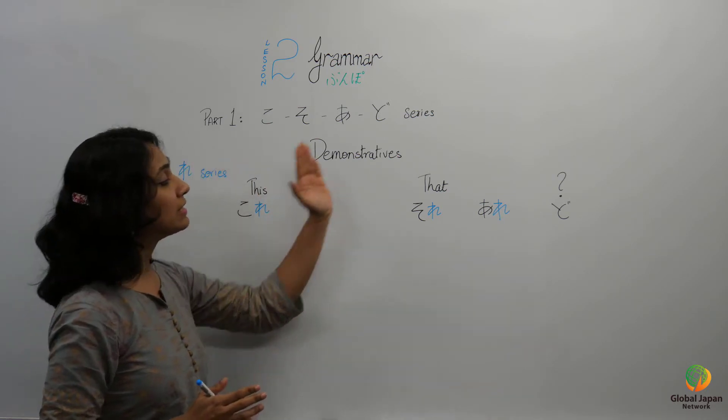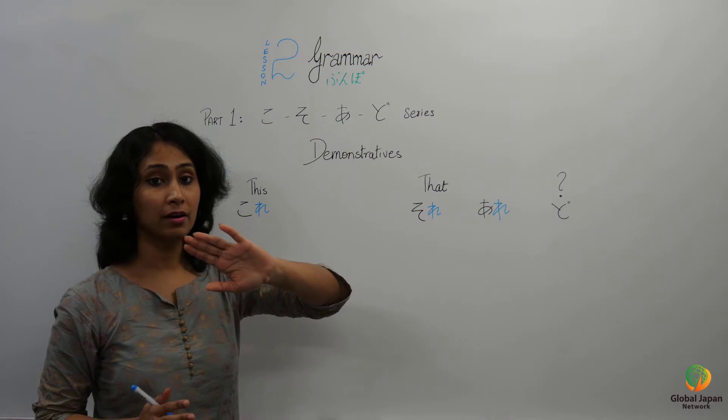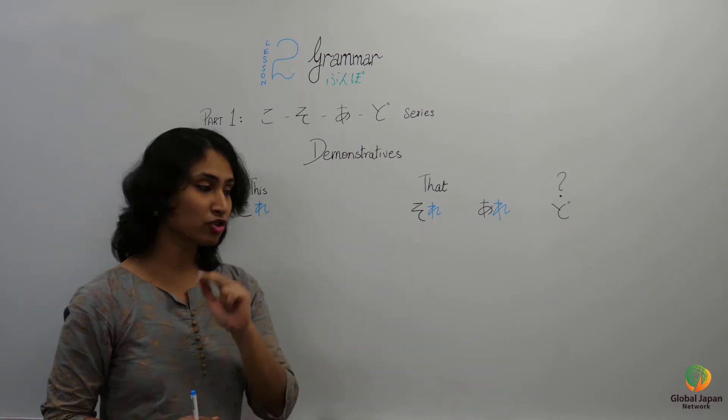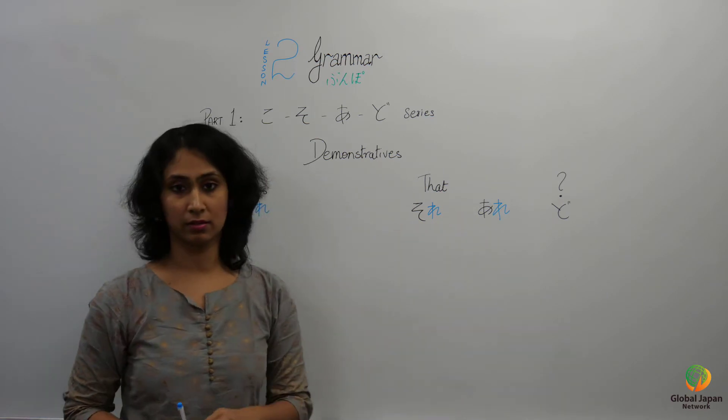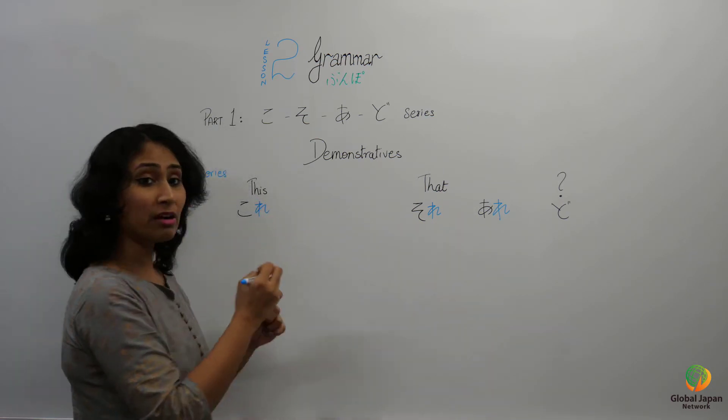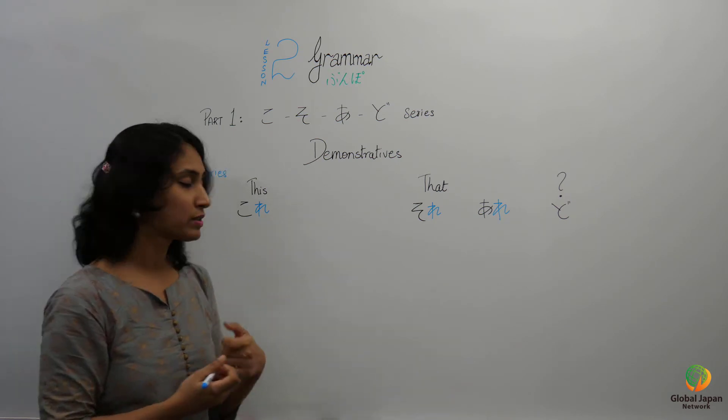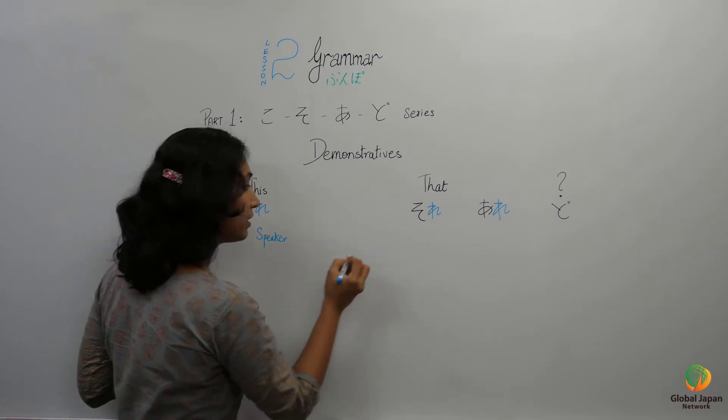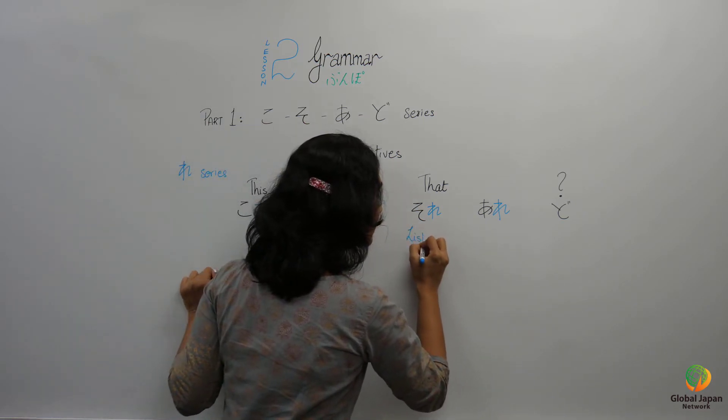Anything that is distant from the speaker, in English there is only one word, that. But in Japanese there are two words. How there are two for the same thing you may wonder? Whenever you're speaking and you want to refer to something, there are two people in conversation: one is the speaker and the other person is the listener.